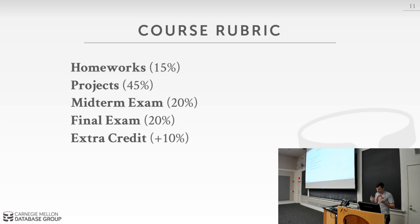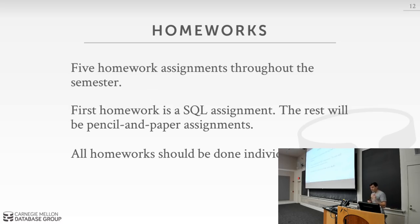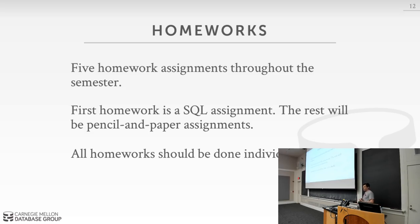For grades, if you're an SCS undergrad, this class now counts for the systems elective — the requirement is over 40% for projects, which is why it's 45%. There'll be a midterm exam and a final exam. Later on I'll discuss the opportunity for extra credit — basically we're writing an encyclopedia about databases, where you pick one database system and write an article about it. For homeworks, there will be five during the semester. The first will be the SQL assignment on Wednesday, submitted through Autolab with auto-grading and immediate feedback. All other homework assignments will be pencil-and-paper submitted as PDFs on Gradescope. These should all be done individually.